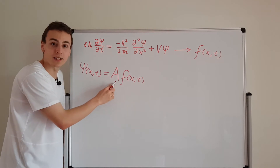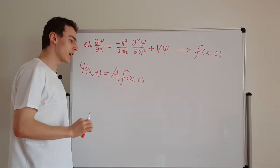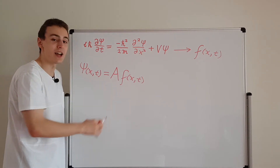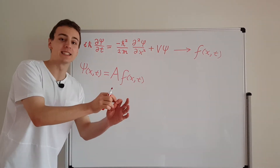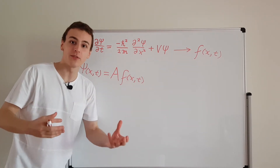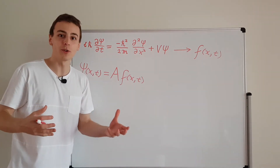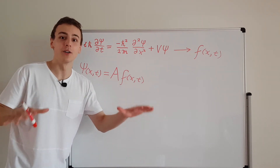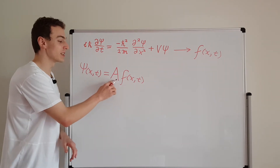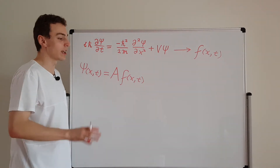This constant a can be a complex number — it can have an imaginary component, a real component, or any mix. However, we run into problems if a is equal to zero, because then we have the trivial solution where the wave function is zero over the entire domain. If the wave function is zero everywhere, the probability density function is also zero everywhere, which would physically correspond to a probability of zero for any experimental outcome. That doesn't make physical sense, so the trivial solution a equals zero is unphysical and we can ignore it.